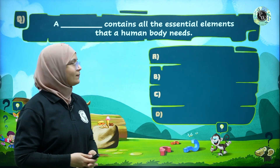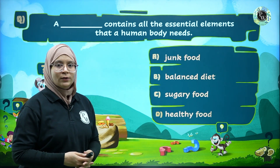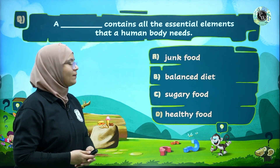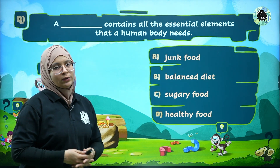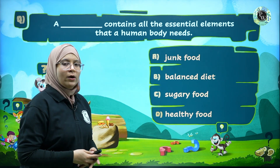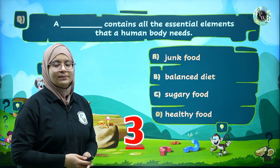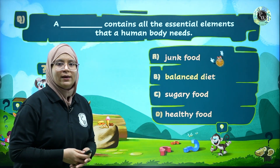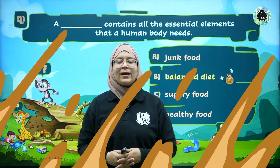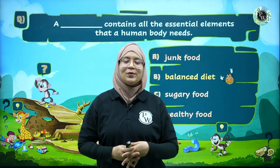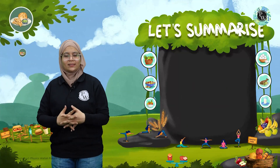Question 5: What contains the essential elements required by the body? Option A: junk food, Option B: balanced diet, Option C: sugary food, Option D: healthy food. The correct answer is Option B — balanced diet. I hope you liked the quiz, children!